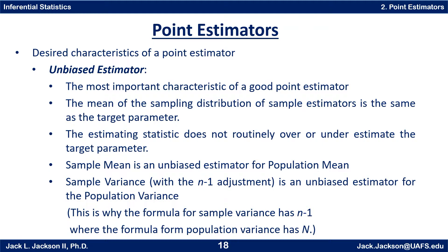With the n minus 1 adjustment in the formula, the sample variance is an unbiased estimator of the population variance. This is why the formula for sample variance has n minus 1 where the formula for the population variance has n. The adjustment was made to make the estimator unbiased.